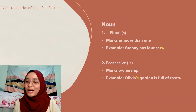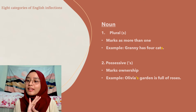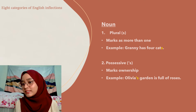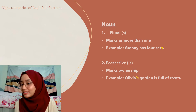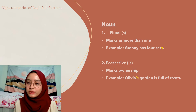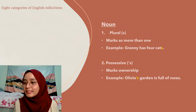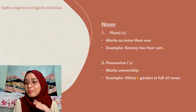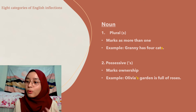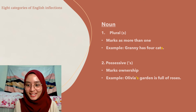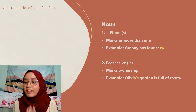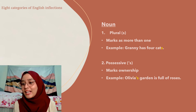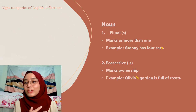Under nouns, there are two categories of inflections: plural and possessive. The plural inflection marks multiple or more than one by adding the suffix -s to a noun. For example: cat → cats, burger → burgers, boy → boys, girl → girls.